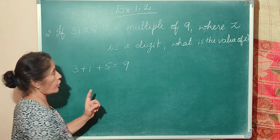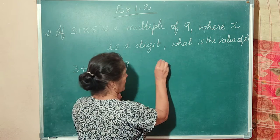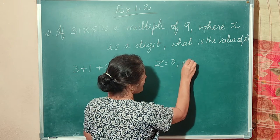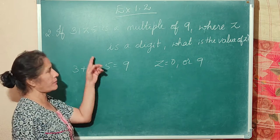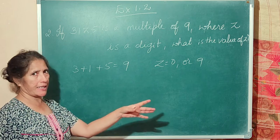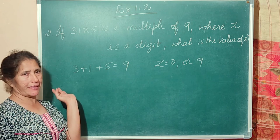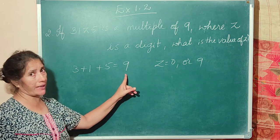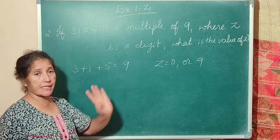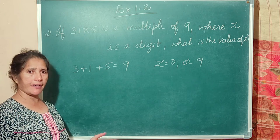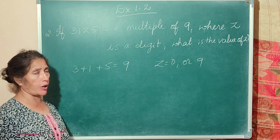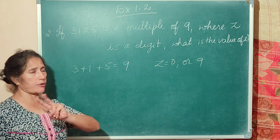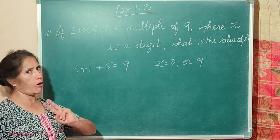So z can be 0 or 9. If you put z equal to 0, the sum remains 9. If you put z equal to 9, the sum becomes 18 — again a multiple of 9. So z can have 2 values: either 0 or 9.